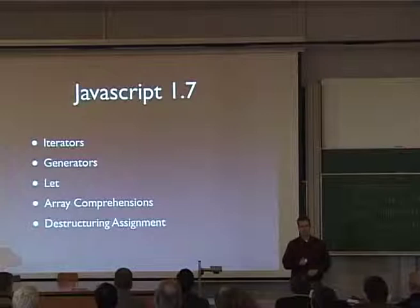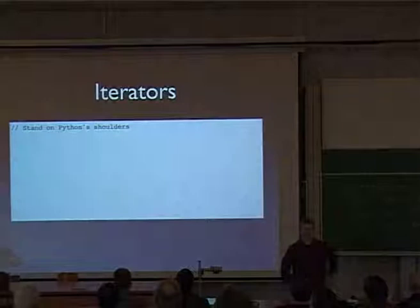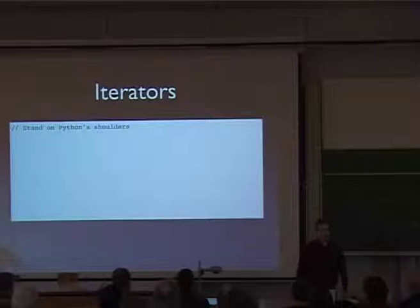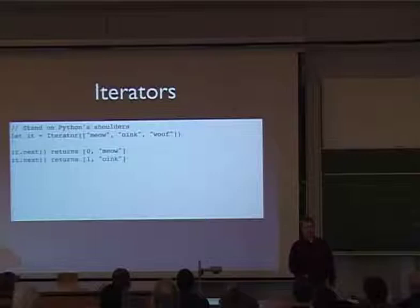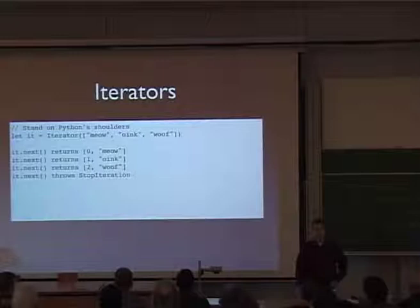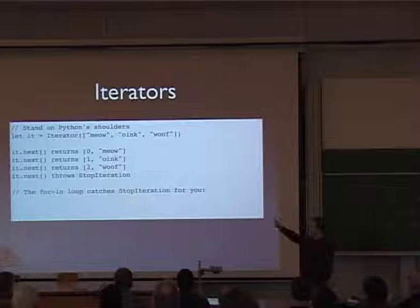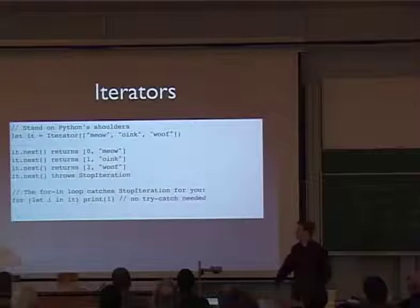So iterators — if you've done Python programming, this should look very familiar. You construct an iterator from a list of objects of some form. Then you get to walk through that iterator using .next() to get the values out until eventually you hit the end and get a StopIteration exception generated. You can catch that exception and do what you want. More likely, you would use iterators with the built-in try-catch that you get out of a for loop.